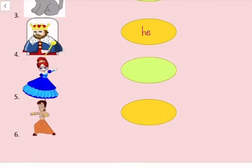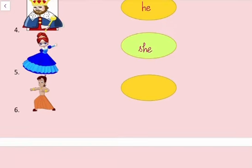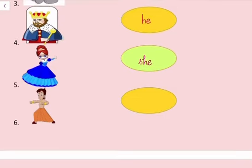Fifth picture, ek queen ki hai, queen ke liye hum she use karenge. Sixth picture, chhota bhim ki hai, in ke liye hum he use karenge.